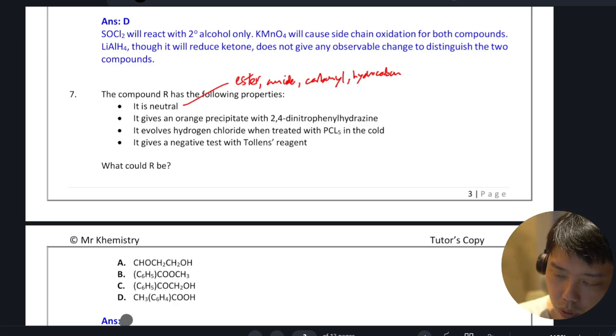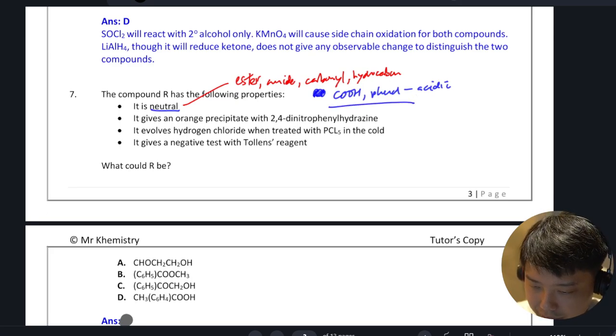So the only ones that are not neutral are carboxylic acid and phenol because these two are acidic. So when you see the word neutral, it just means that these two functional groups are not present.